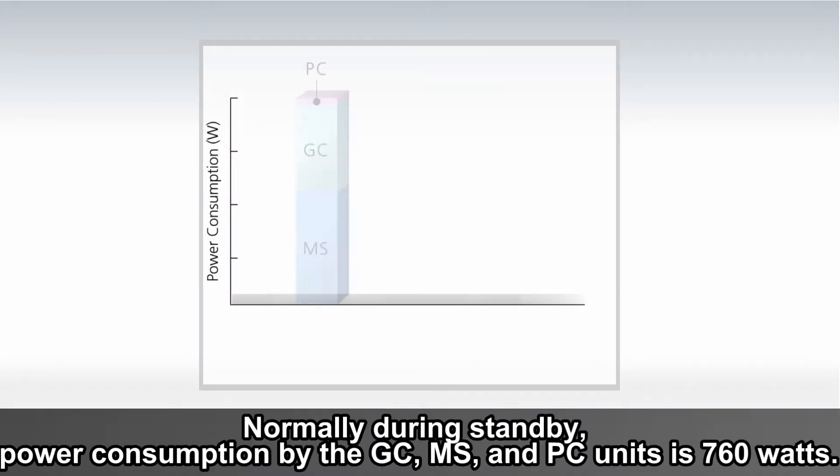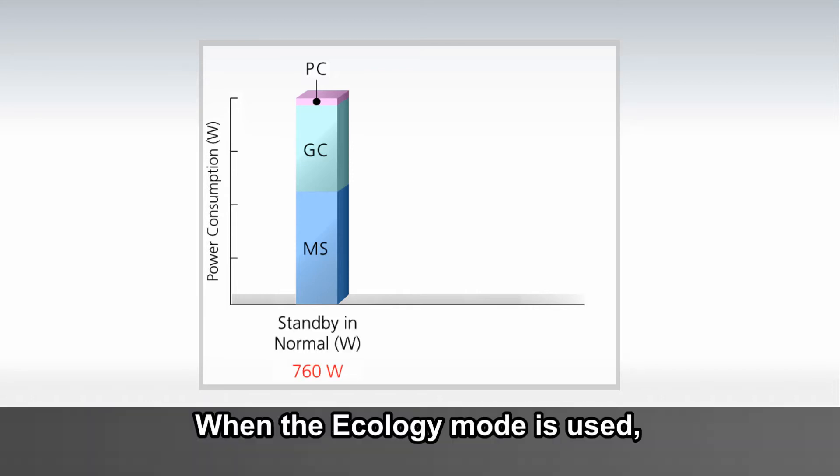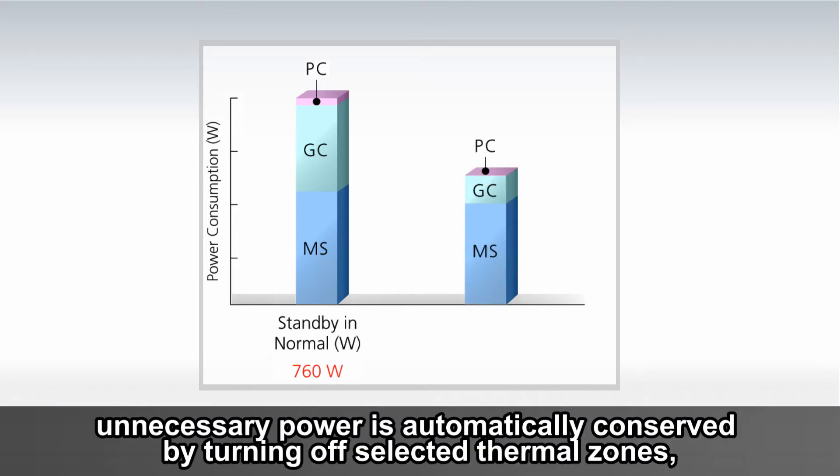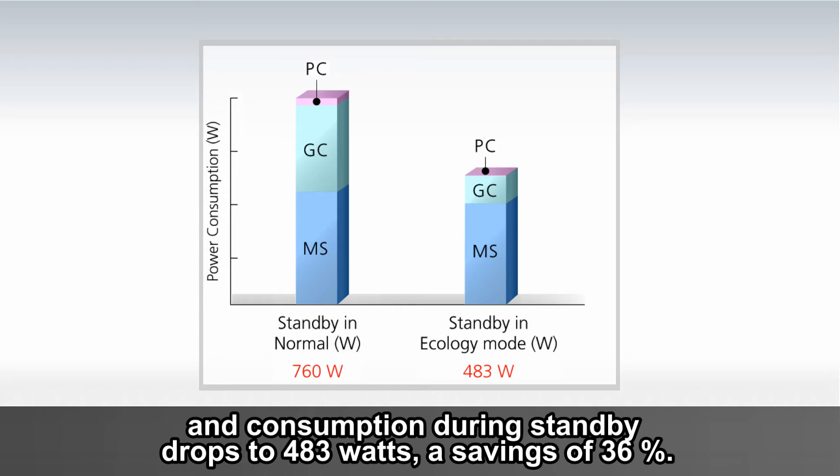Normally during standby, power consumption by the GC, MS, and PC units is 760 watts. When the Ecology Mode is used, unnecessary power is automatically conserved by turning off selected thermal zones, and consumption during standby drops to 483 watts, a savings of 36%.